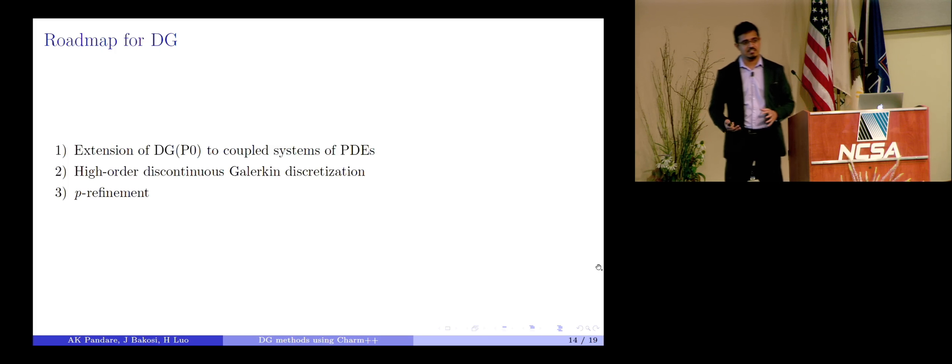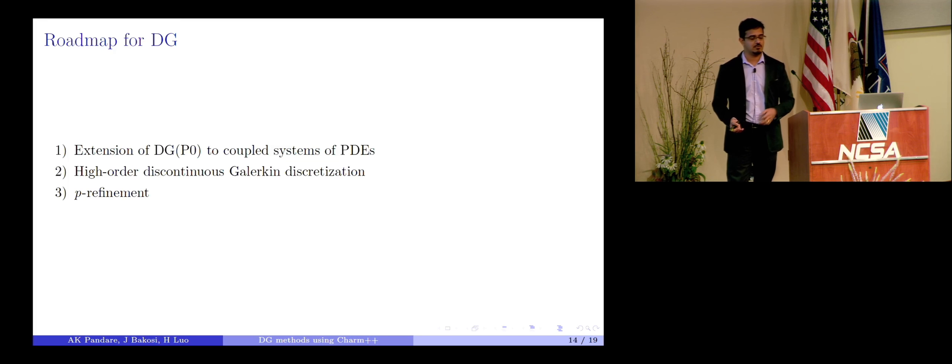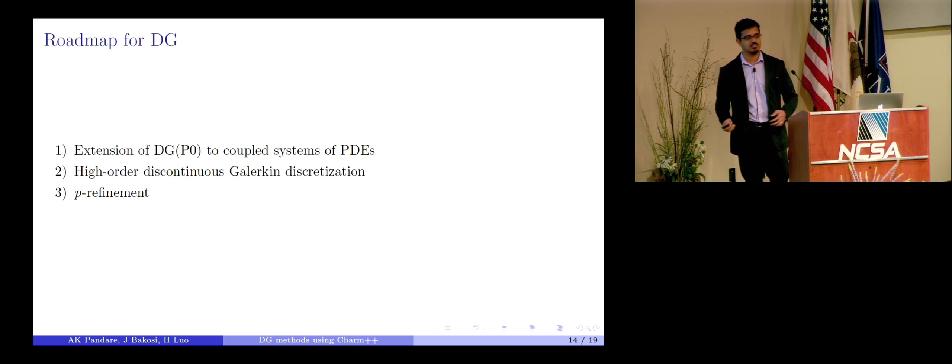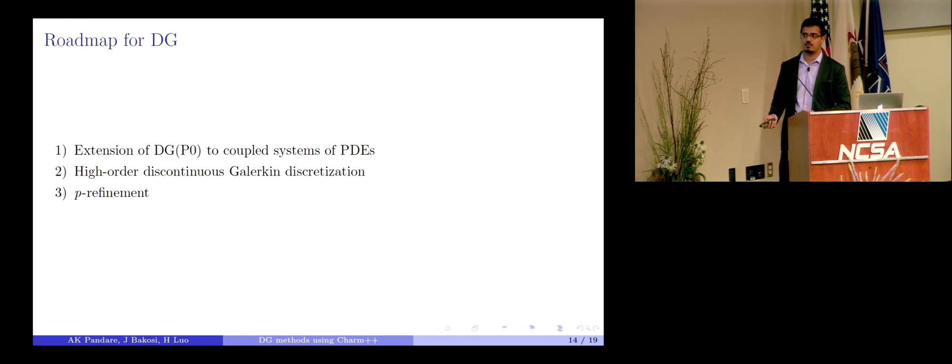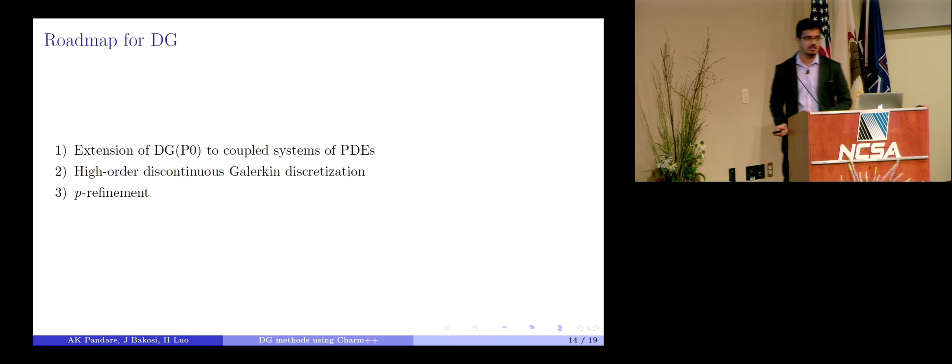All right. So the future roadmap, like I said, we are just starting off with this project. We have a first order code set up. Right now, we actually also have the Euler equation set up. I have not shown the results here. But how are we planning to proceed? So like I said, the extension to coupled system of PDEs like Euler equations, now we have Stokes equations. So basically, more and more physically relevant or practically relevant stuff. That's one thing. But more importantly, we want to move on to high order DG methods. And why this is important is for p-refinement. I'll show you in the next slide why p-refinement is important.